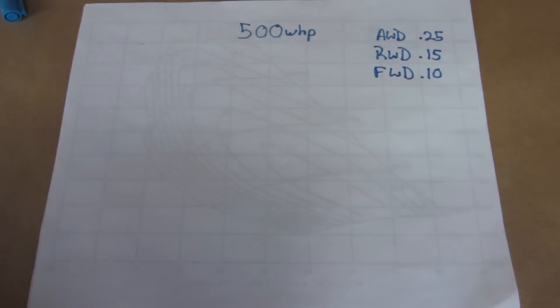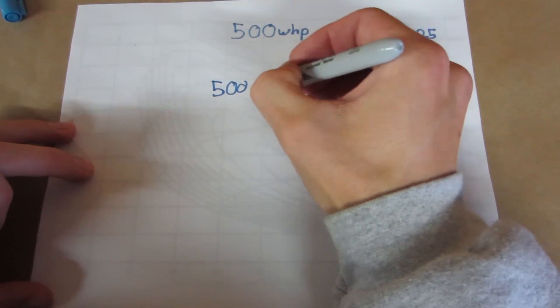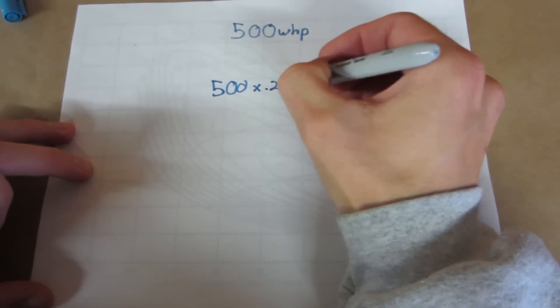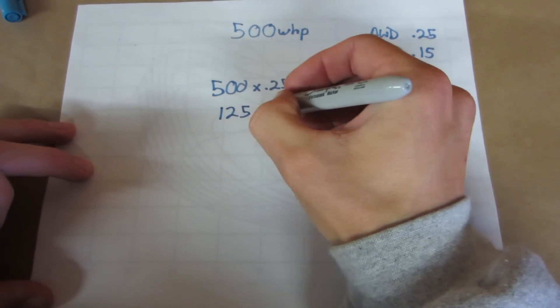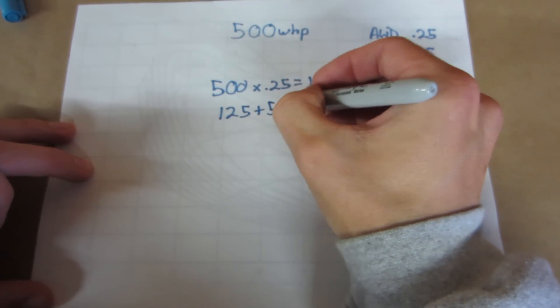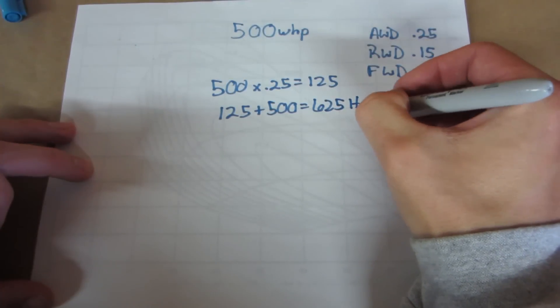With that in mind, 500 wheel horsepower in all-wheel drive means that you need enough air for 625 horsepower at the crank. We get that by going 500 times 0.25 or 25 percent. That equals 125. So we add that 125 to 500 horsepower and we find out we need 625 horsepower at the crank.